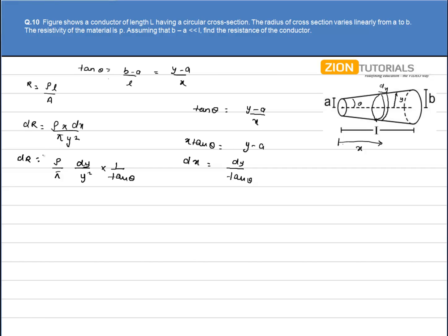Now, since y varies from a to b, resistance varies from 0 to R. So I have ρ divided by π tan theta, integral of dy by y² from a to b.